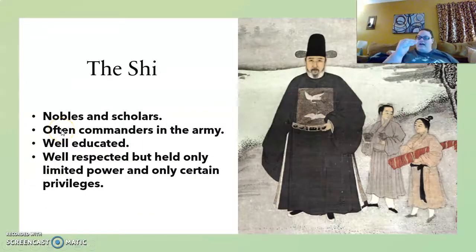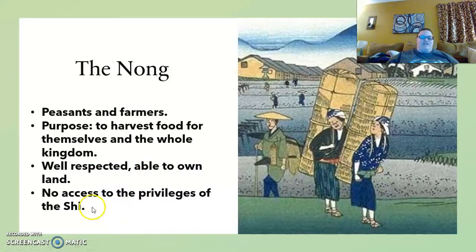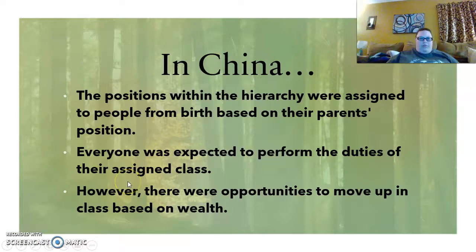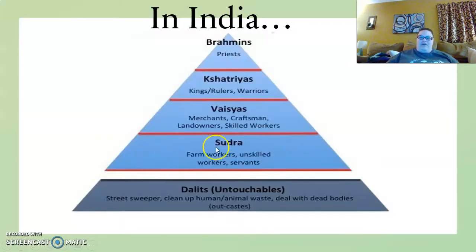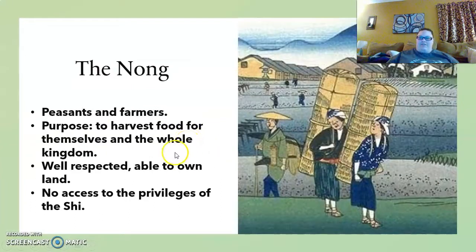The third class down from the top was the Nong — these were peasants and farmers. Their purpose was to harvest food for themselves and the whole kingdom. The Nong were well respected and able to own land, though they did not have access to the privileges of the Xi. Farmers were in the upper middle class in China — that's really different than in India, where the lowest class was the farmers. In China they're the third class from the top, straight up middle class, and much more respected.